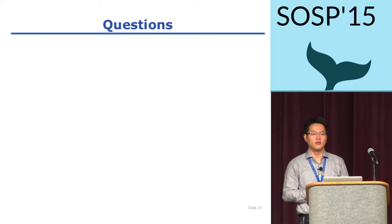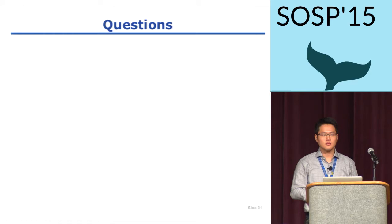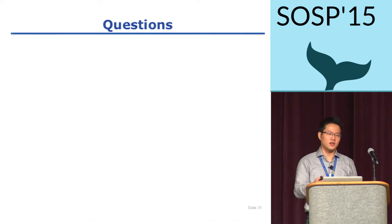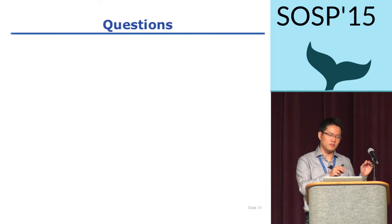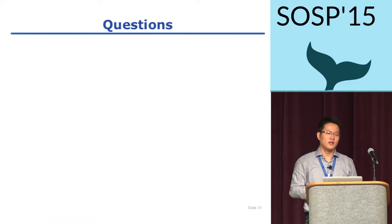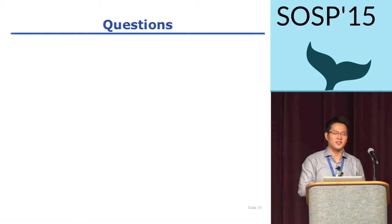The questioner follows up: does the completion record get created in more than one place? The speaker says no. The questioner asks: if the machine holding the completion record is dead and not responding, can you recover it? The speaker clarifies that the client will see the server is still recovering data for a specific object, and the completion record and the object share the same object ID, so the system can be sure both are moved to the same server.